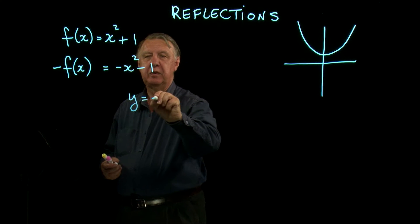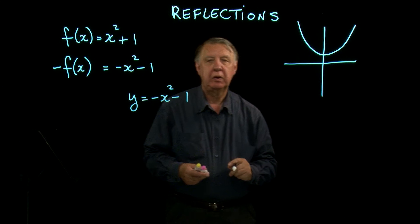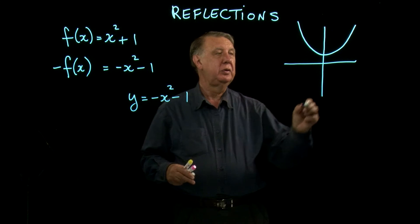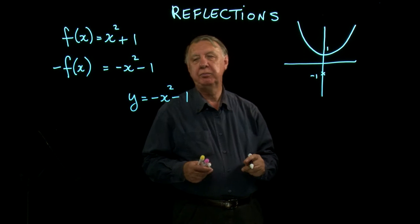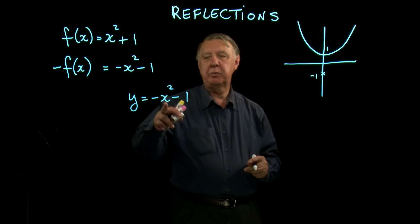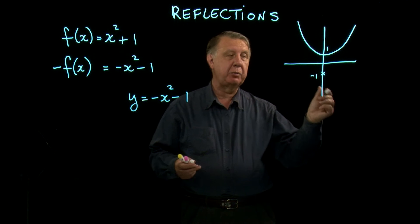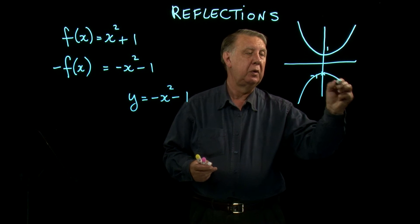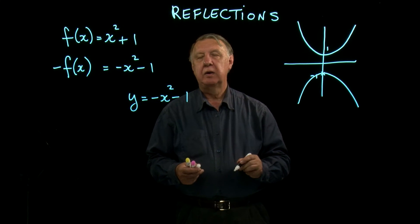What does that graph look like? Well, it's certainly going to go through negative 1. That, by the way, is positive 1. And because it's negative x squared, we know it's an upside down parabola. So we know it's going to do that.